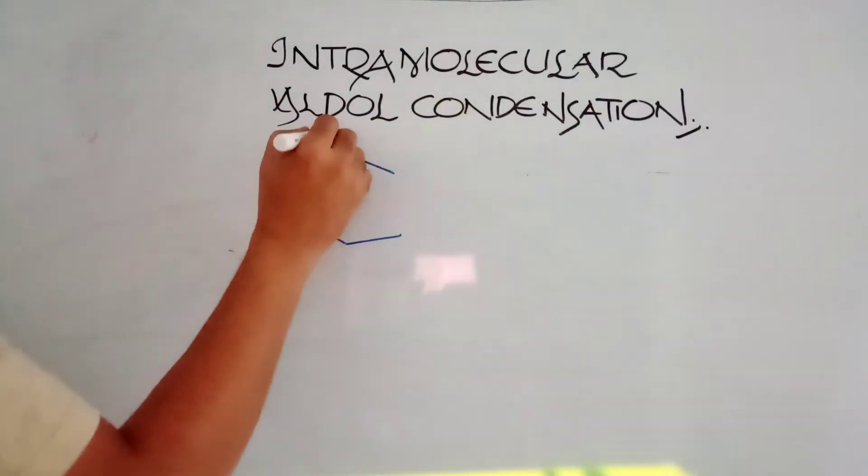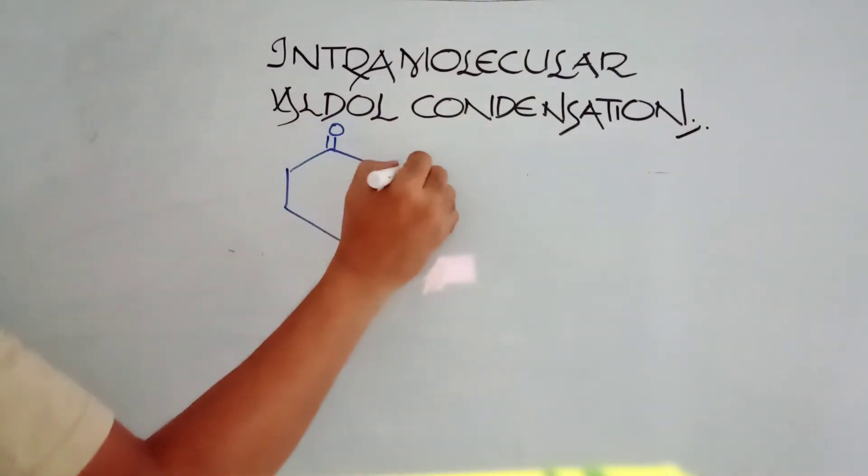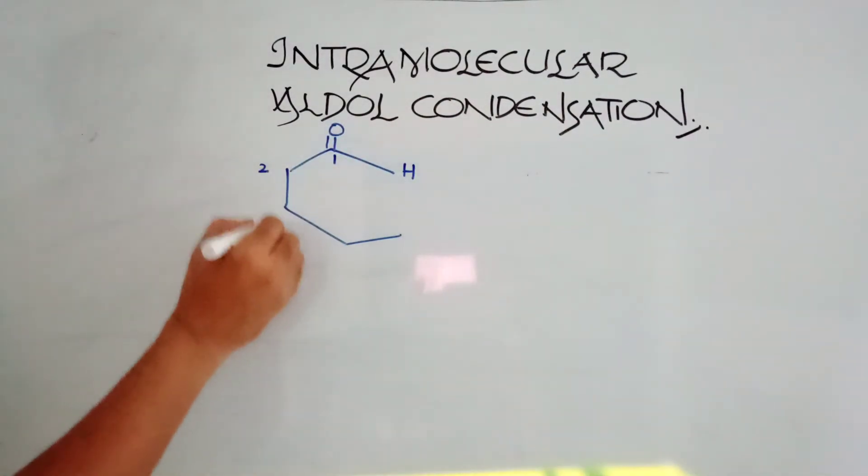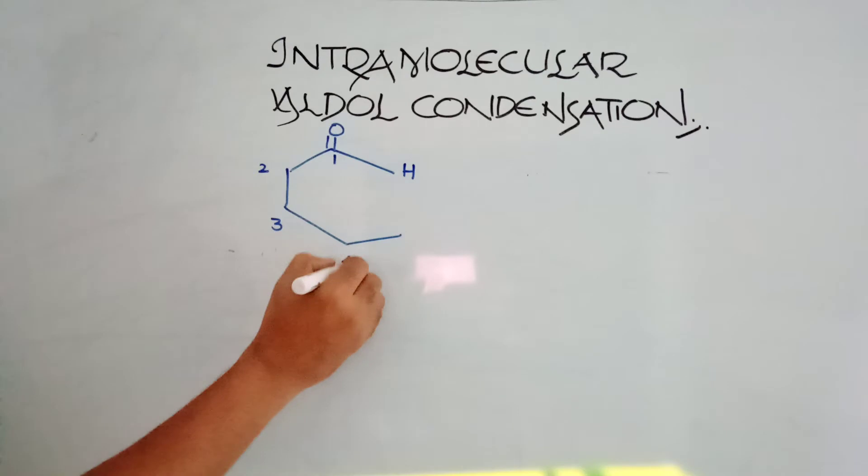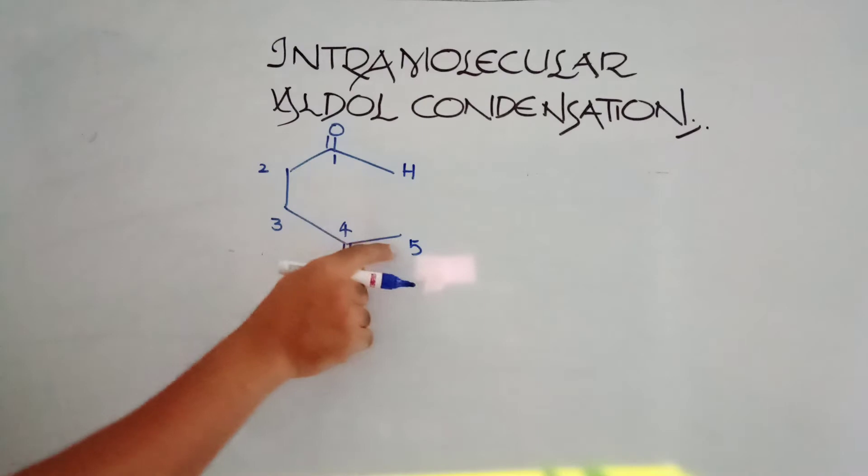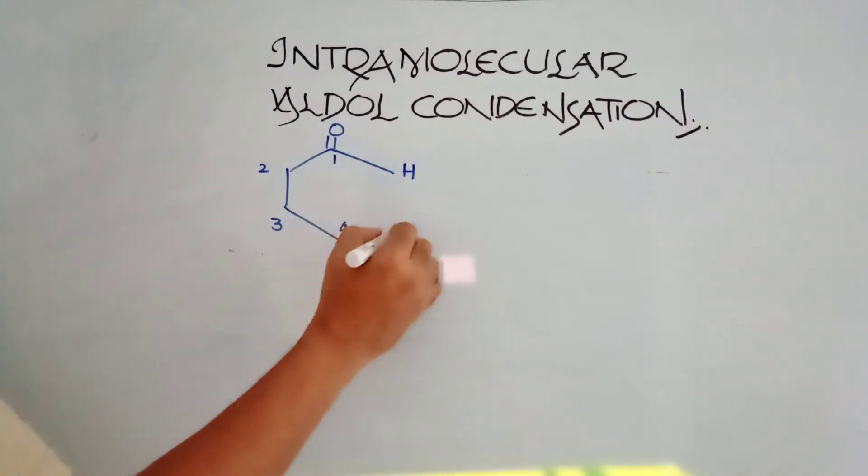For example, this is double bond O, this is hydrogen. This is first place, second place, third place, fourth place, fifth place. In place of fourth, I am taking a ketone group. If this is methyl, I can say this is methyl, this is aldehyde, this is ketone. You can take anything. So there must be alpha hydrogen. Here alpha hydrogens are here. This is CH3.